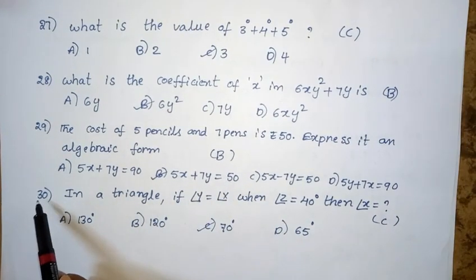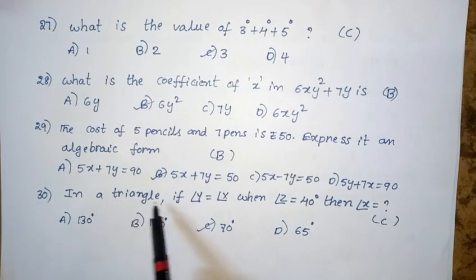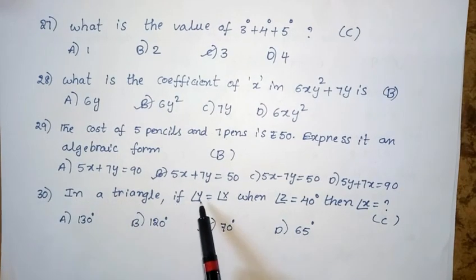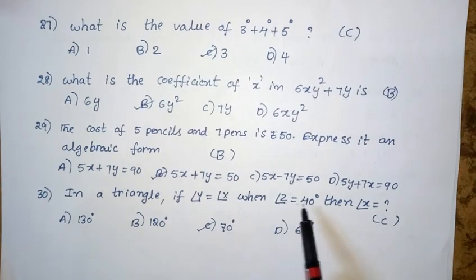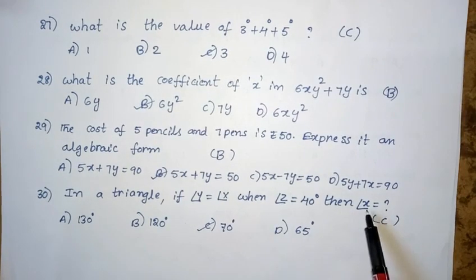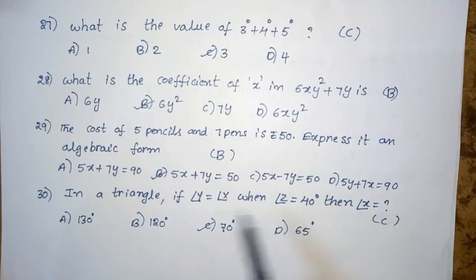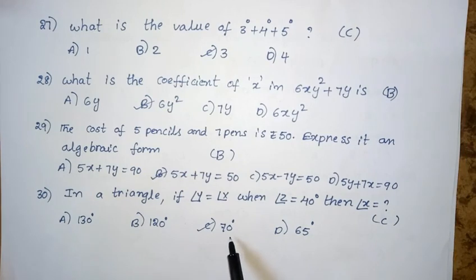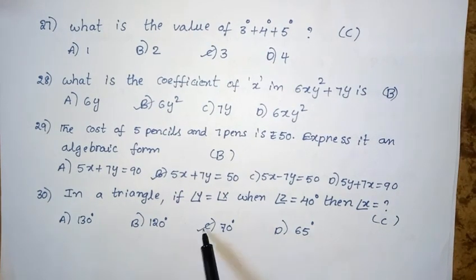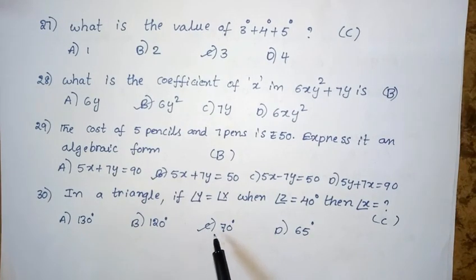Thirtieth question: In a triangle, if angle Y equals angle X and angle Z equals 40 degrees, then angle X equals — Option A: 130 degrees. Option B: 120 degrees. Option C: 70 degrees. Option D: 65 degrees. The right answer is option C — 70 degrees.